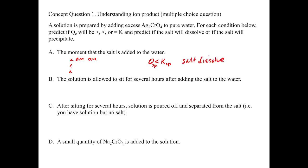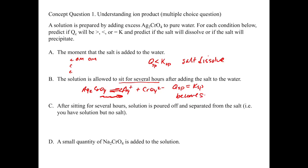Now the solution is allowed to sit for several hours after adding the salt to the water. Over several hours, the silver chromate is having time to dissolve. The concentration is going to come up until it equals the Ksp — we're going to become saturated. As we get to this point, the salt is sitting there saturated, Q is going to equal Ksp, and nothing is going to be happening — we're going to be in equilibrium.